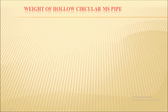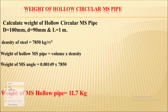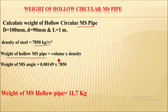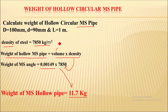We have calculated the volume. Since this is a mild steel pipe, the density of steel is 7850 kg per meter cube. So the weight of this hollow pipe equals volume into density: 0.00149 into 7850. We get the weight of the MS hollow pipe as 11.7 kg. Note that if the material is different — for example, if this is aluminum — the density would be 2700 kg per meter cube, so the density value will be different for different materials.